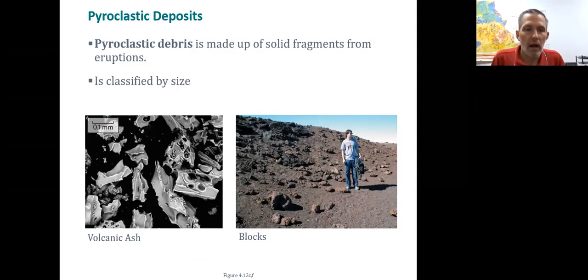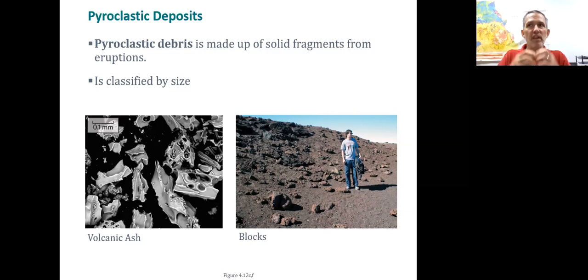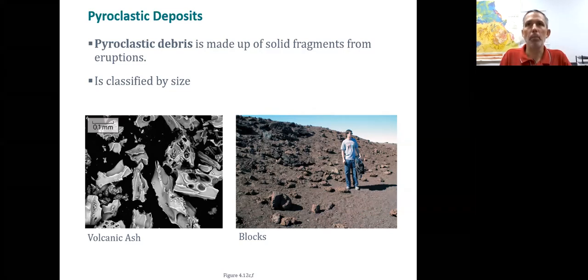If the rock has already cooled off but still has gases in it, those gases can be shot out to create pyroclastic debris. We learned that 'clast' means pieces and 'pyro' means fire — so these are fire pieces of debris, chunks of material thrown out from a volcano.